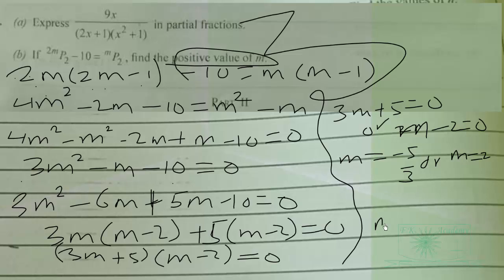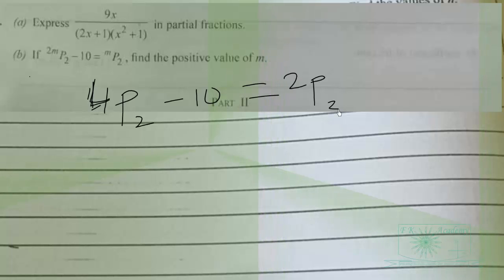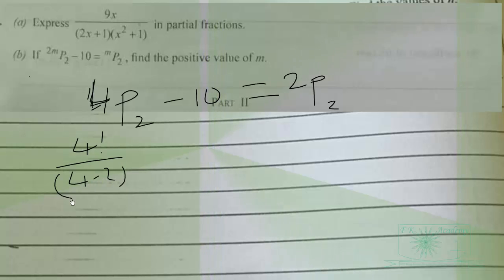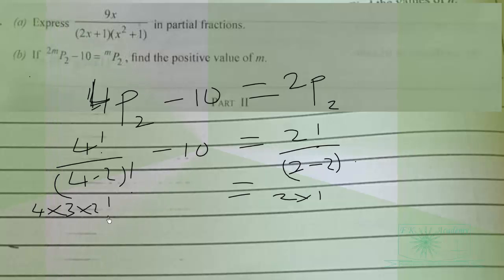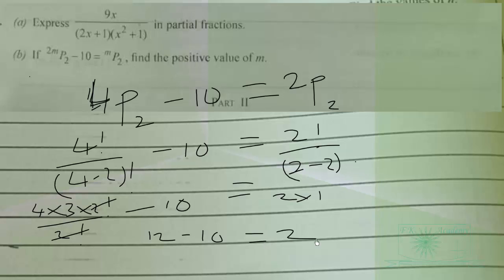The positive value of m is therefore 2. Let's verify: 2m = 4, so 4P2 − 10 should equal 2P2. 4P2 = 4!/(4−2)! = 4×3×2!/2! = 12. Then 12 − 10 = 2, and 2P2 = 2!/0! = 2. So 2 = 2. Correct!